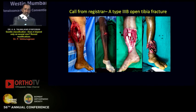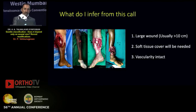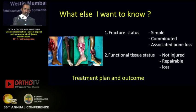When my registrar calls and tells me that there is a type 3b open fracture tibia in the casualty, it could be any one of these — from an easily treatable open wound to a badly salvageable open limb. From a type 3b, I know it is a large wound that will require soft tissue cover and the vascularity is intact. However, I would like to know more about the fracture status and the functional tissue status to plan my treatment and discuss the outcome with the patient and relatives.